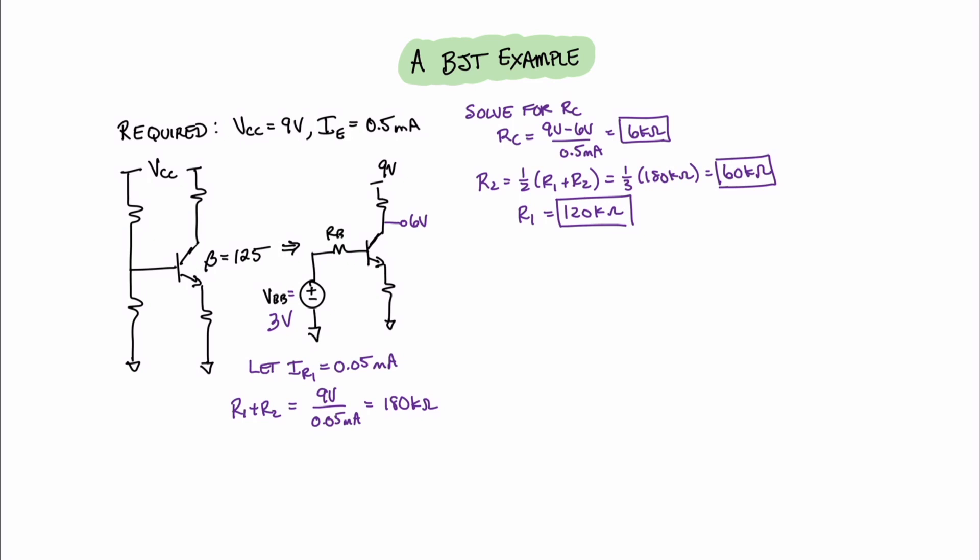At this point, we're almost there in solving this circuit. In order to find an accurate value for the emitter resistor, the best method is to use a loop equation. So to find RE, we can say that 3 volts equals IE over beta plus one times RB plus 0.7 plus IERE. Plugging in for values that we already know and solving this equation for RE gives us RE equals 3 volts minus 0.7 volts minus 0.5 divided by 126 times 40 kilo ohms divided by 0.5, and that equals 4.3 kilo ohms. And with that, we've successfully found all of the required resistances for this four-resistor biasing circuit. And that concludes this video of unwired learning.